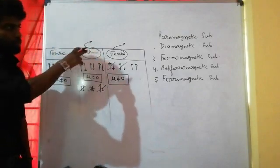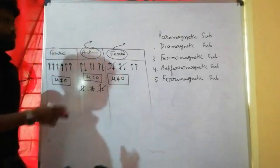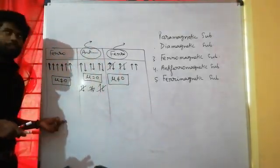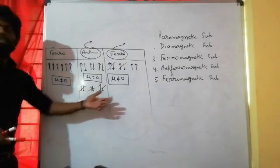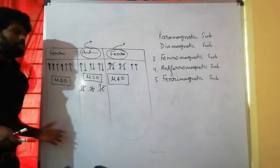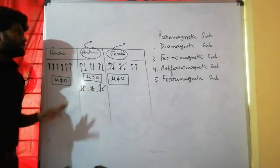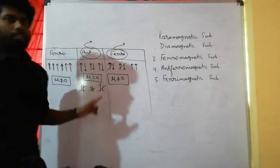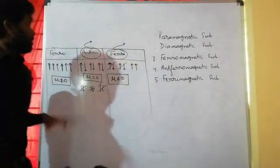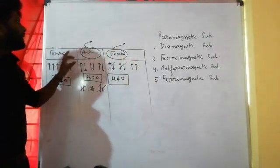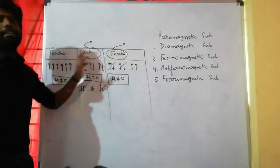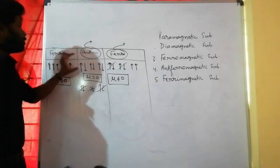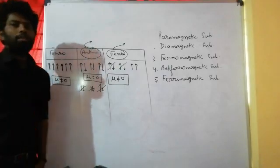In the next video, I will write all the definitions, examples, and important points for ferromagnetic, anti-ferromagnetic, and ferrimagnetic substances, defined on the basis of their domains. Thank you.